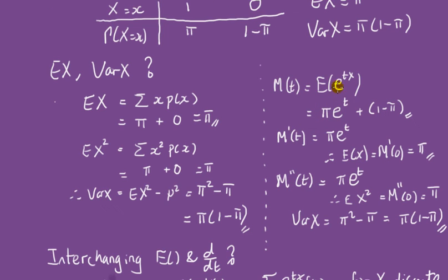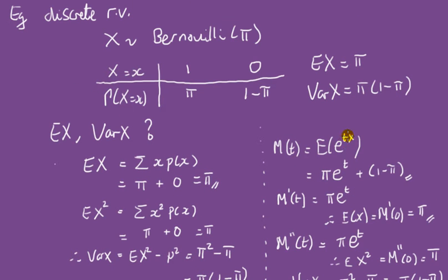Take hold of the definition — here's the MGF. When x is 1, it's e to the t times pi; when x is 0, e to the 0 is 1, so it's 1 times 1 minus pi, giving 1 minus pi. It's very easy to forget that 1 minus pi term, because people think e to the 0 is 0 — but it's 1.